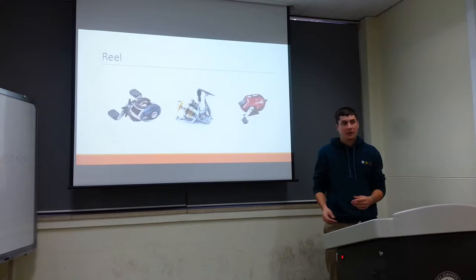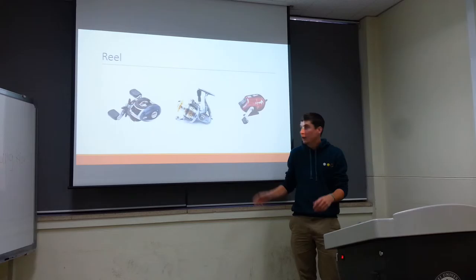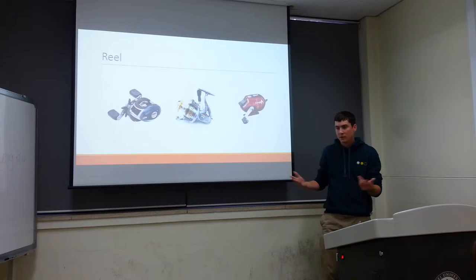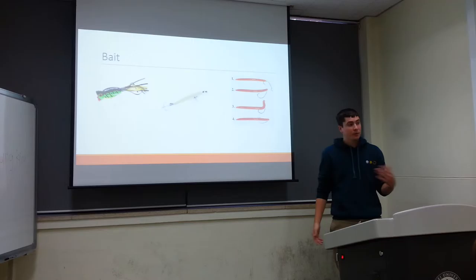The next is spin caster. This is the most common kind used from intermediate to advanced fishermen. The release is just this little hook right here. You flick upwards, cast a line out, close it. This is for beginners. It's a closed spool rod. You just press the button, flick it out. Very simple. It automatically closes after you let go.